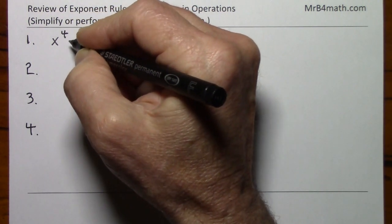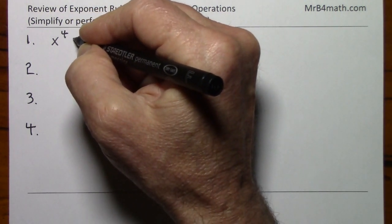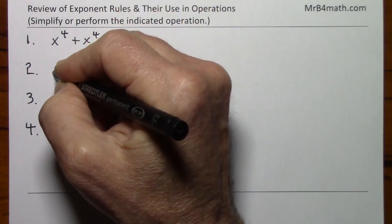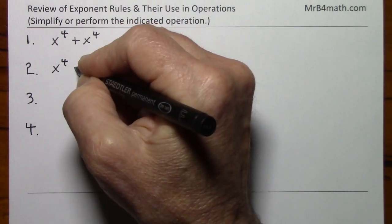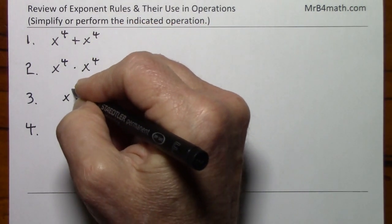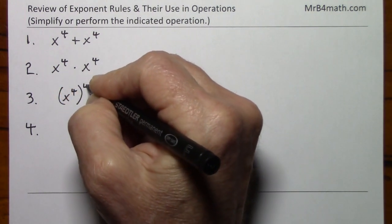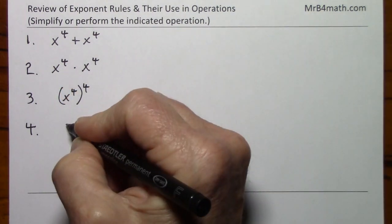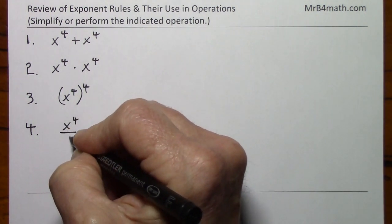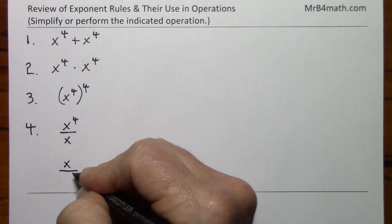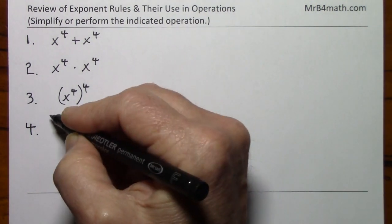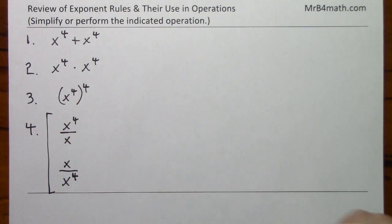So to continue in a logical pattern, we'll have x to the fourth plus x to the fourth, x to the fourth times x to the fourth, x to the fourth raised to the fourth. And then here we'll have two cases: x to the fourth over x, or x over x to the fourth. So again, number four is sort of two cases.